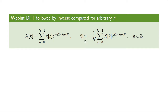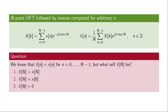Now comes the question: we can always compute the inverse formula for an arbitrary value of n. But what should x-tilde of n be if n is not within the range 0 to N-1? In particular, what would x-tilde of N be? Would it equal x(N), would it equal x(0), or would it be 0? The correct answer is that x-tilde of N is equal to x(0).